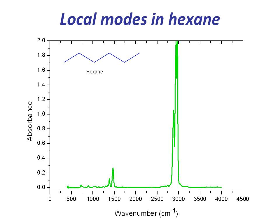For example, in hexane, the C-H stretches and bends are decoupled from the C-C stretches and bends, giving rise to peaks around 2,900 and 1,500 wave numbers.